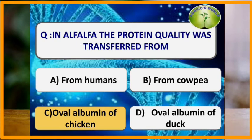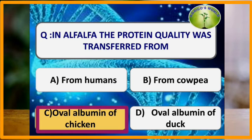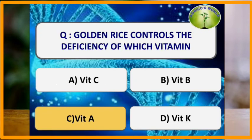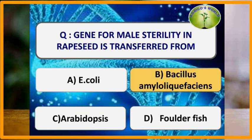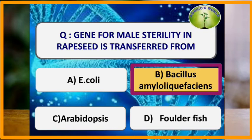In alfalfa, protein quality was transferred from ovalbumin of chick. Golden rice controls the deficiency of vitamin A. The gene for male sterility in rapeseed is transferred from Bacillus amyloliquefaciens.